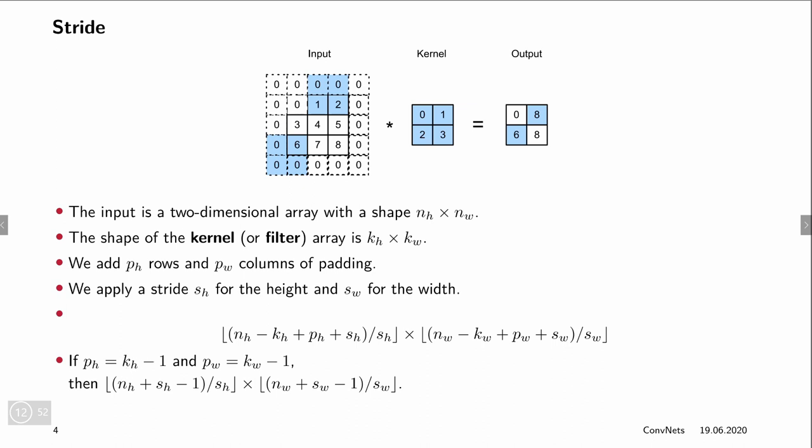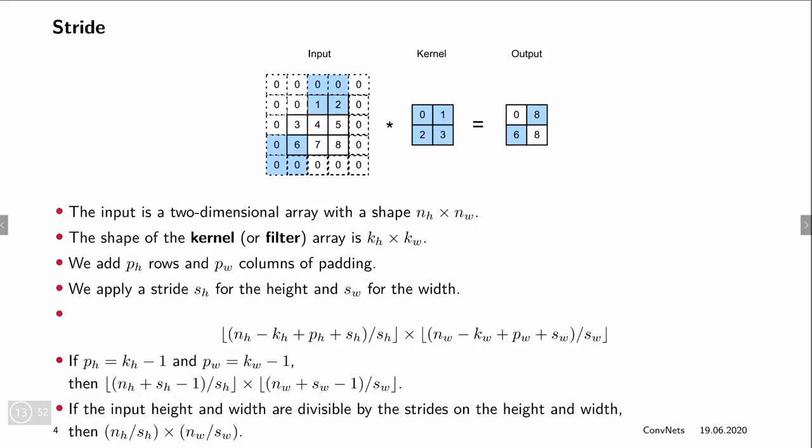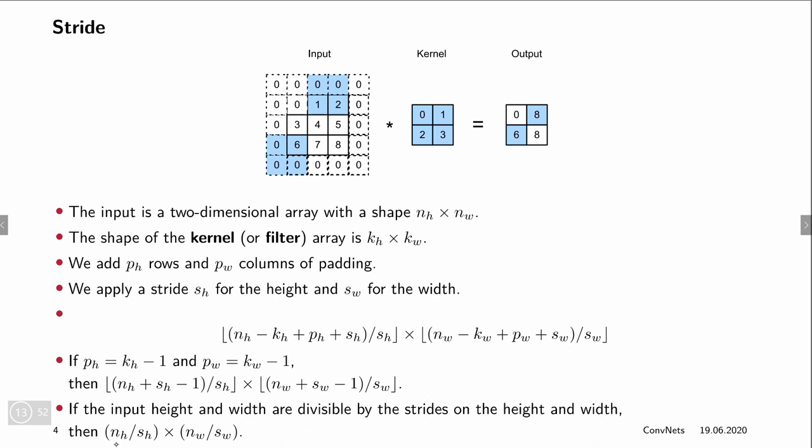So to do a little back of the envelope calculation, let's assume that we pad equal to the kernel size minus 1. So p_h equals k_h minus 1 and p_w equals k_w minus 1. As a result, these two numbers cancel. And instead of having minus k_h plus p_h, we now have only a minus 1 in there again. So we have n_h plus s_h minus 1 divided by s_h and n_w plus s_w minus 1. And let's make one additional simplification. If the input height and the input width are both divisible by the stride, then the size of the output is the size of the input divided by the stride along all dimensions, along the height dimension and along the width dimension.